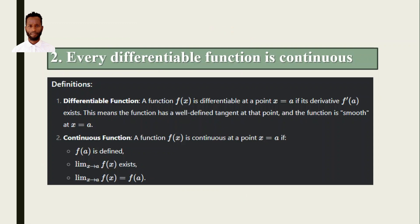To say a function f(x) is differentiable at a point x = a, if its derivative f'(a) exists. This means that the function has a well-defined tangent at that point and the function is smooth at x = a.